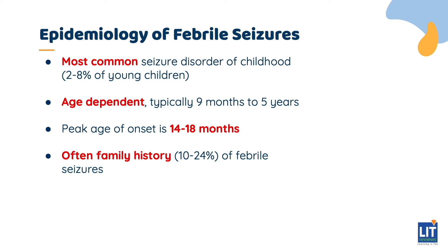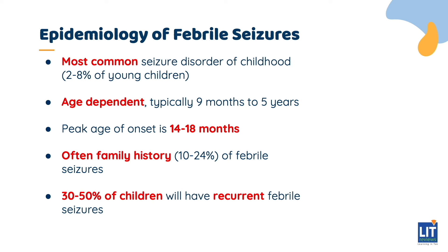Most genetic studies have found a polygenic inheritance pattern, but a small number of families have been found to exhibit autosomal dominant inheritance. Additionally, 4% of patients with febrile seizures will have a family history of epilepsy. Between 30% and 50% of patients will have recurrent febrile seizures during subsequent febrile illnesses. Risk factors for the recurrence of febrile seizures will be discussed shortly.